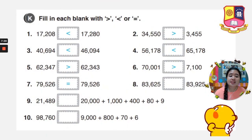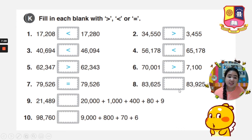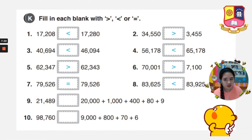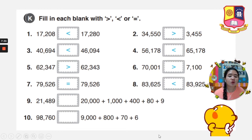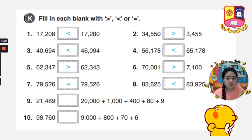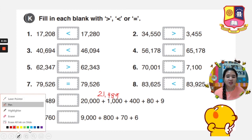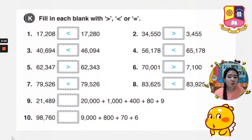Number 8: 83,625 and 83,925. Let's compare: 8 and 8, the same; 3 and 3, the same; 6 and 9 — which one is bigger? That is 9, so the mouth is at 83,925. Number 9: We have 21,481 and 20,000 plus 1,000 plus 400 plus 80 plus 9. That equals 21,489. Comparing: they are equal. Very good.